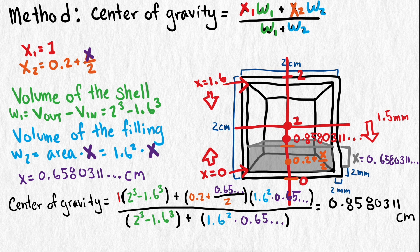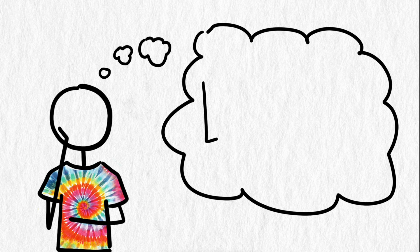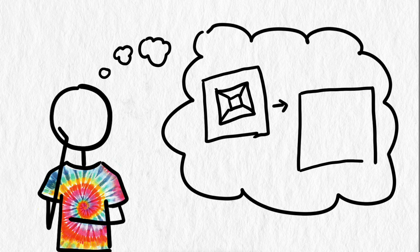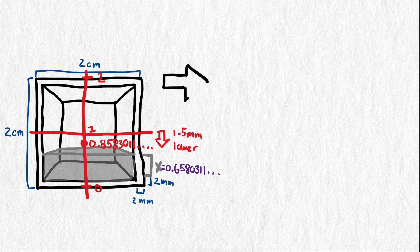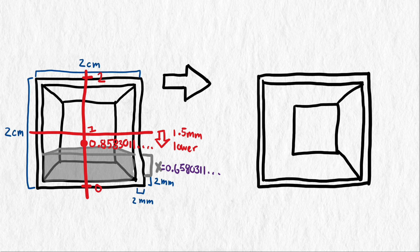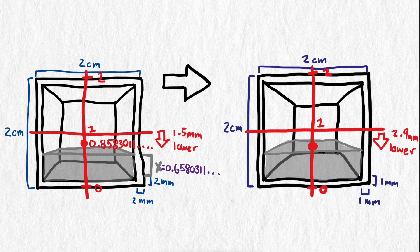That 1.5 millimeter doesn't seem like a lot. We could lower the center of gravity more by making the thickness of the shell smaller. Instead of 2 millimeters thick, what if it was 1 millimeter thick? We can change the thickness values and look to see how much the center of gravity changes. We can move the center of gravity almost twice as far from the center of the cube, around 2.9 millimeters now, instead of 1.5 millimeters.